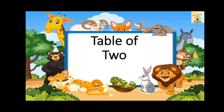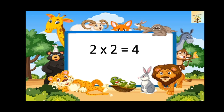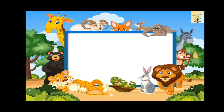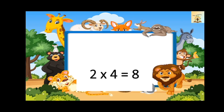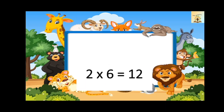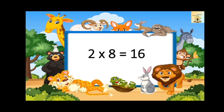Table of two. Two ones are two. Two twos are four. Two threes are six. Two fours are eight. Two fives are ten. Two sixes are twelve. Two sevens are fourteen. Two eights are sixteen.